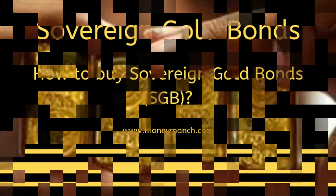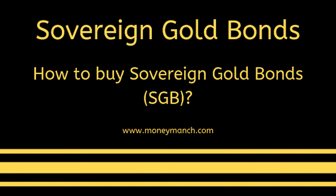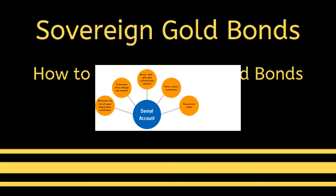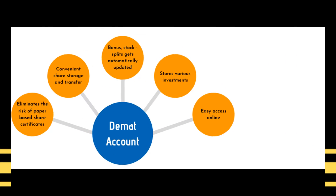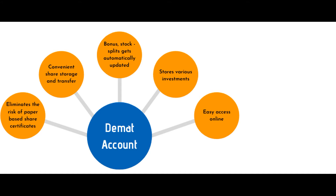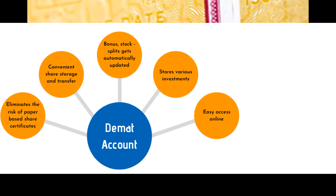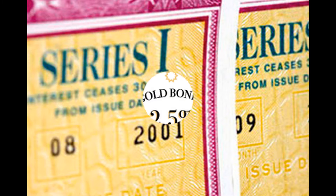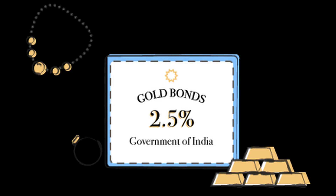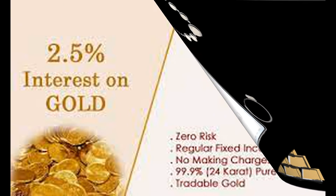If you have a gold bond, you can hold it via a Demat account or in paper form. You can use either a Demat account or a paper type account to hold your gold bond.